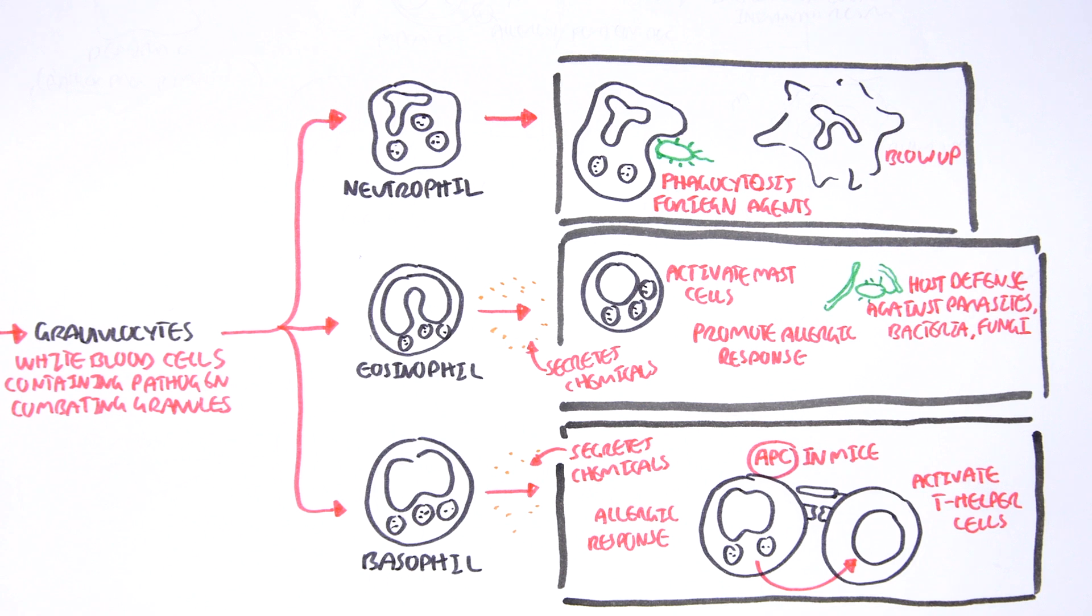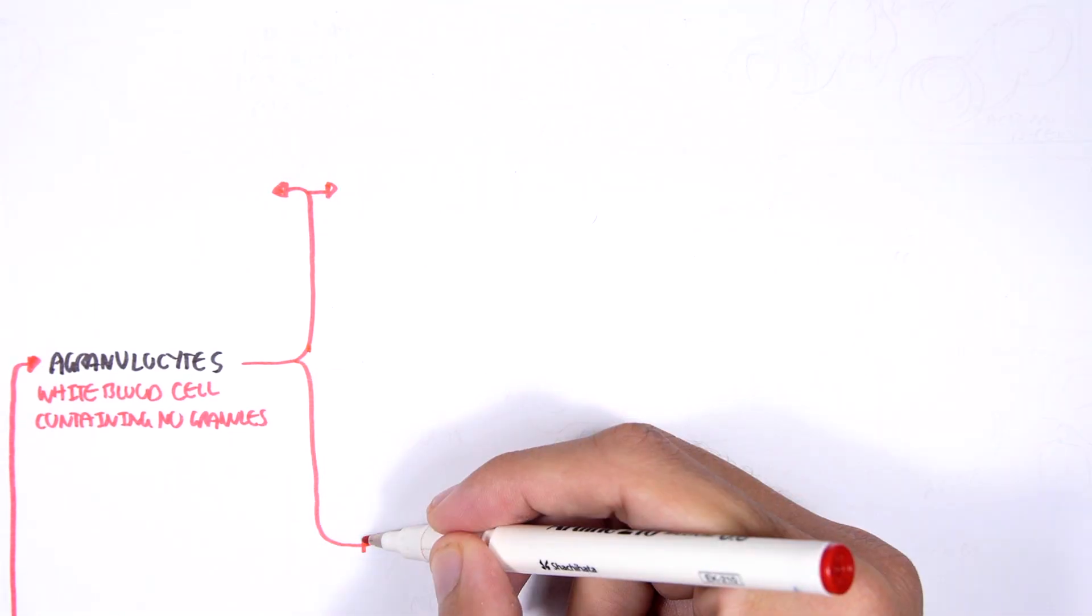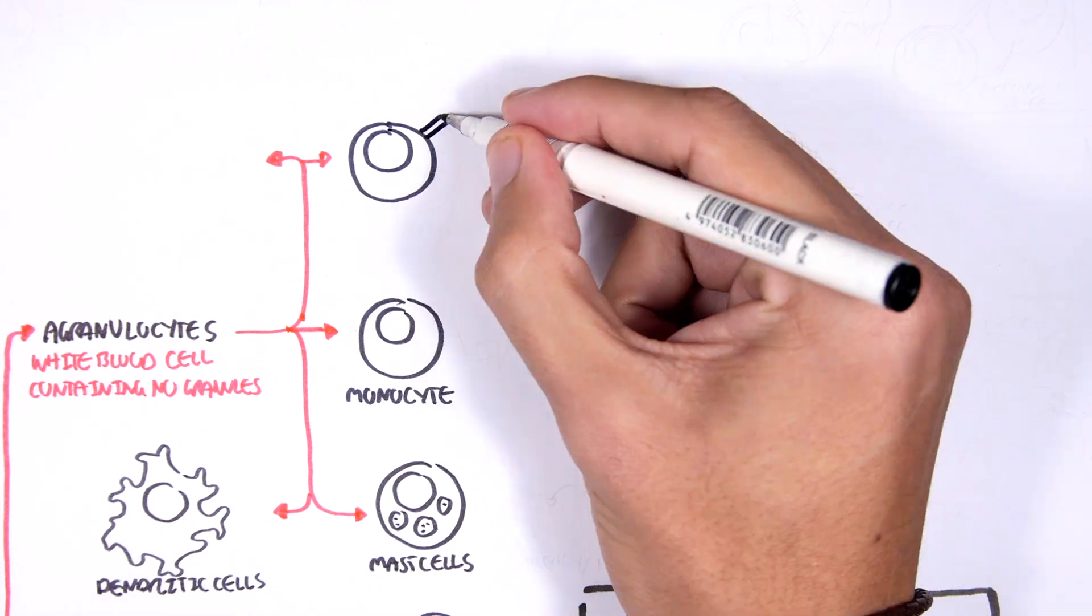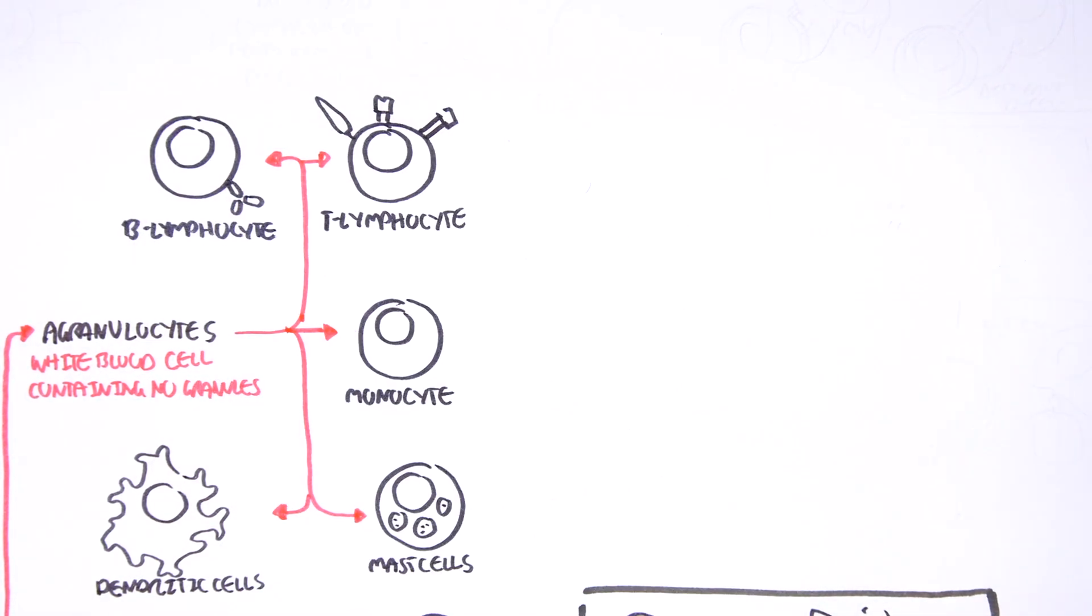Now let's look at the agranulocytes, the cells that do not contain granules. We have mast cells, dendritic cells, monocytes, T lymphocytes, and B lymphocytes.